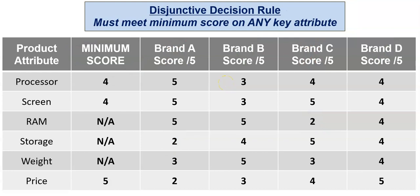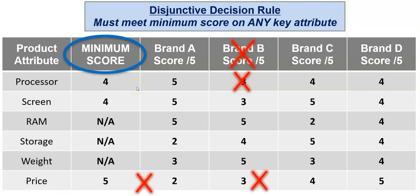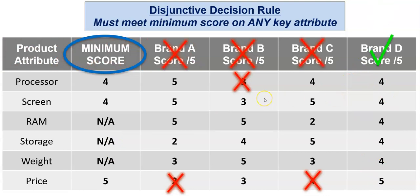The disjunctive decision rule looks for a minimum score on any of our key attributes. We've kept the minimum score but selected only three attributes — the ones we're really interested in as must-haves. The other attributes are not applicable and won't be considered. Brand B only scores three against a minimum of four, so it doesn't stand out. Brand A rules out on price, and brand C rules out as well. Only brand D achieves a four, four, and five, so it becomes our choice again.